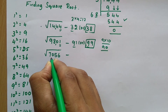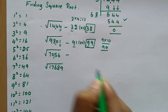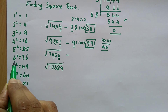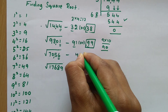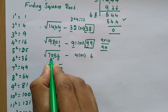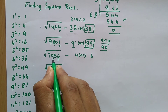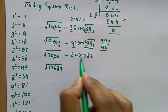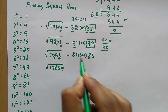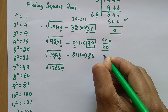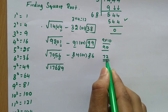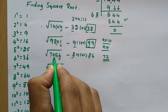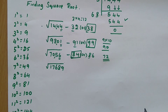For 7056, divide from the right: '56' and '70'. The last digit is 6. Multiplying 4 x 4 gives 16 (ends in 6), or 6 x 6 = 36 (ends in 6). So the last digit is 4 or 6. Below 70, the perfect square is 64, whose square root is 8. So the number is 84 or 86. Next number after 8 is 9, and 8 x 9 = 72. Since 72 is greater than 70, choose the lesser number. The answer is 84.